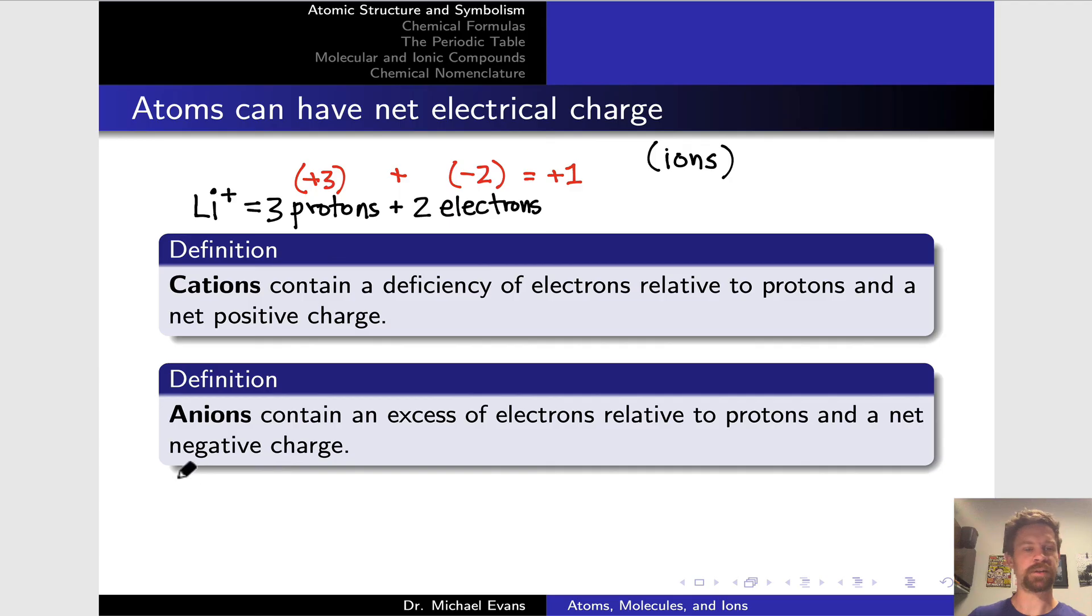Anions have essentially the opposite situation. If we look, for example, at F minus, we have nine protons because nine protons defines fluorine as an element, and we have 10 electrons. Nine protons give us a net charge of plus nine in the nucleus, and the 10 electrons around that nucleus correspond to a charge of negative 10. If we add these together, we see that the ion has an overall charge of negative one, and we indicate that in the symbol with this negative sign in the top right of the atomic symbol.